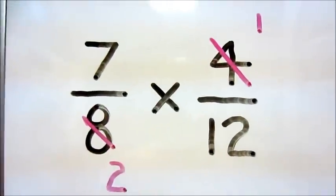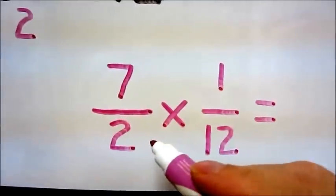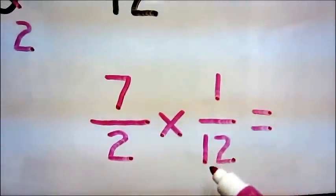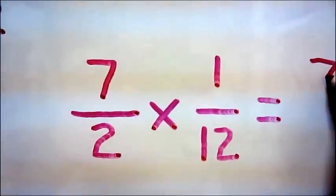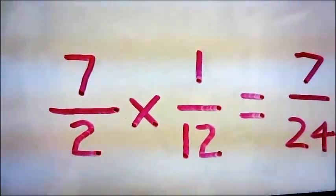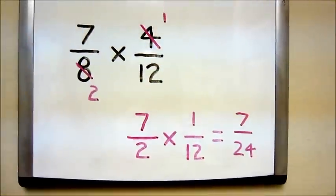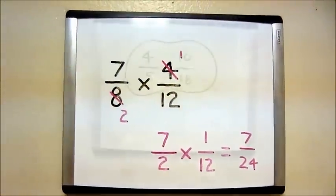This new problem is a result of our cross-canceling and becomes 7/2 times 1/12. Now all we do is multiply across for a final answer of 7/24, and since we cross-canceled, this answer is in its simplest form.